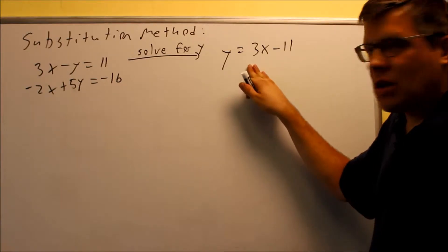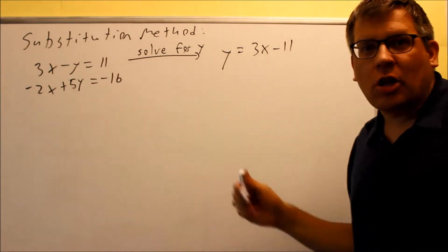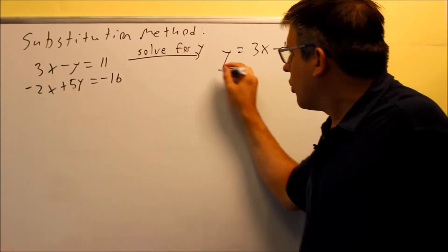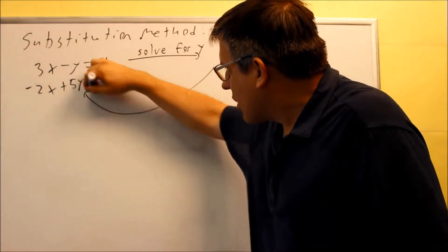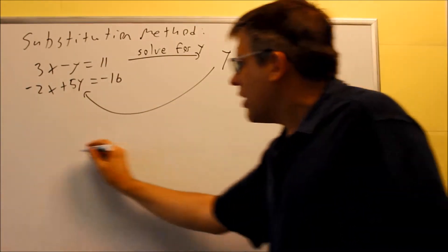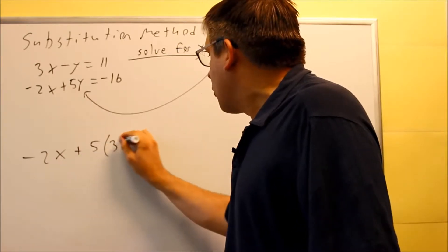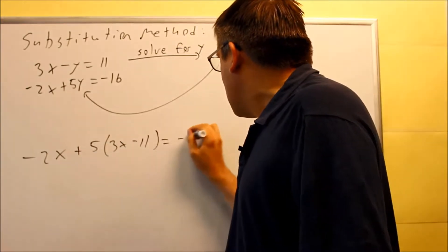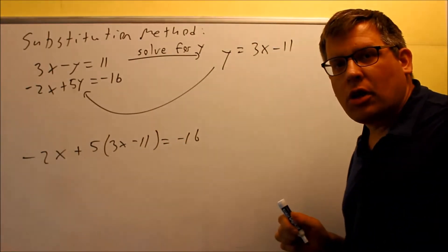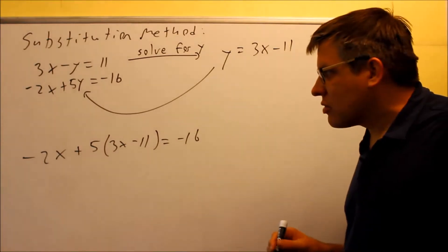Then you're going to take this and put it into the second equation. You don't want to use the first equation again because everything is going to cancel out — you want to use the second one. Since we know what y is, you're going to substitute it right there in the second equation for y. It's going to look like: negative 2x plus 5 times (3x minus 11). Now we've eliminated one of our variables, so x is the only variable left and we can solve for it.